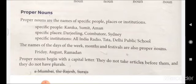Proper nouns always begin with a capital letter. They do not take an article before them and they do not have plurals. So in proper noun, the first letter will always be capital, there will be no article — that means a, an, and the won't be included — and they are always in the singular form.